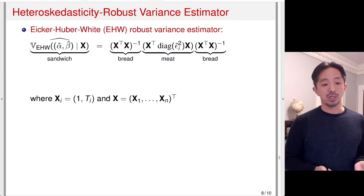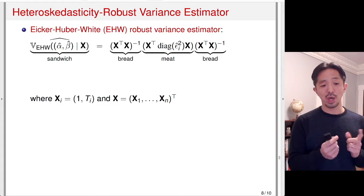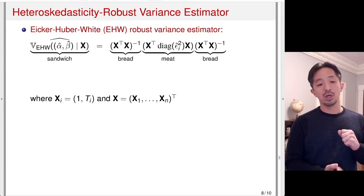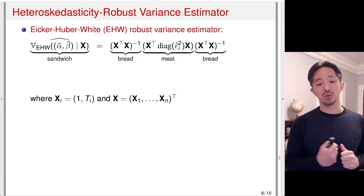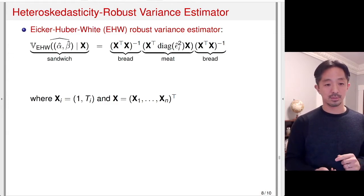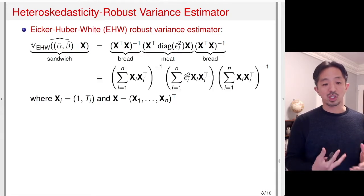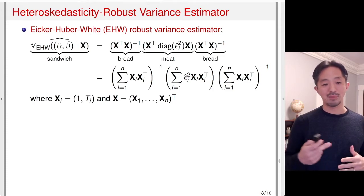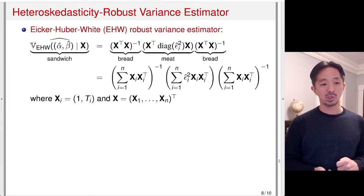Using matrix notation, x_i is a 2-by-1 vector (intercept and treatment variable), and the full matrix X is an N-by-2 stacked matrix. We can also write this using a summation and vector notation, where each term is a sum across all units. This is the typical heteroskedasticity-robust variance estimator.